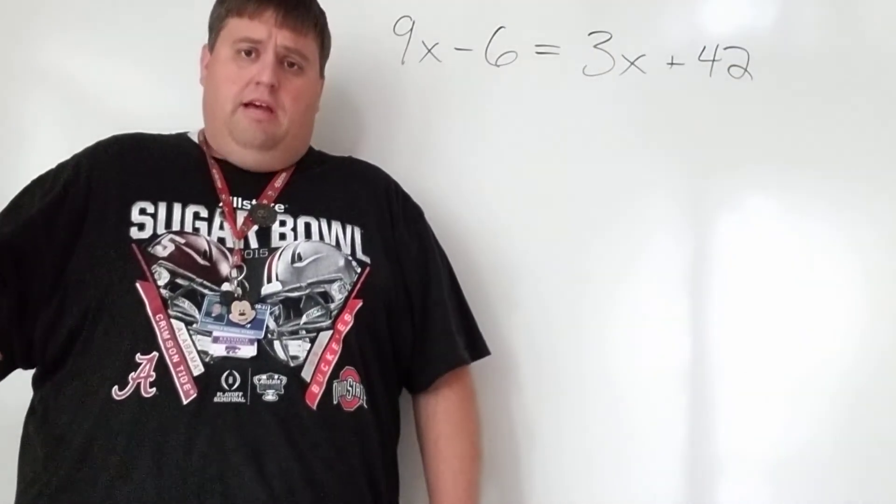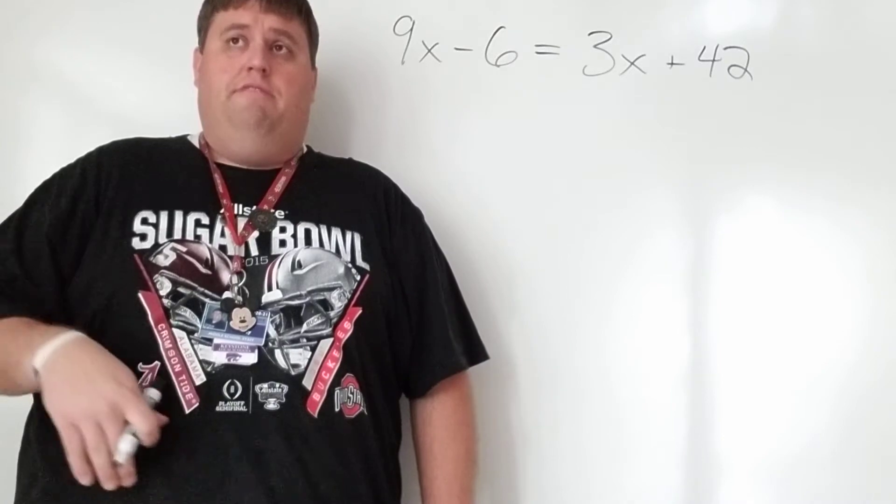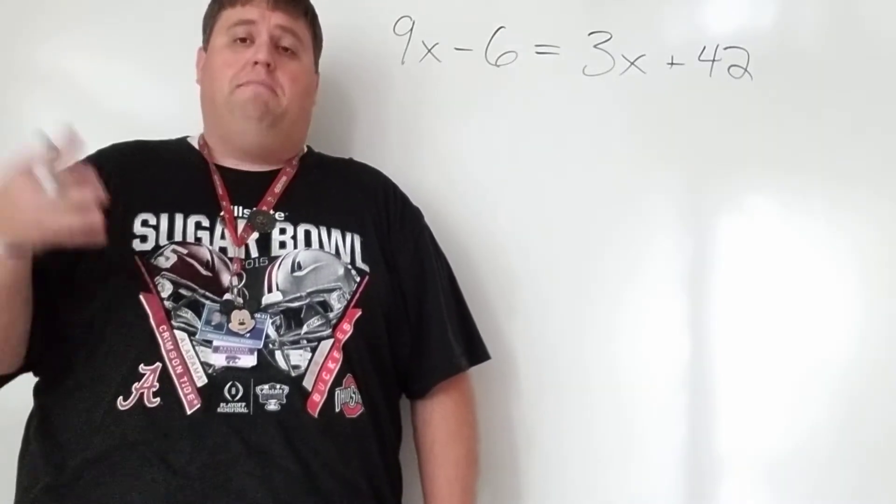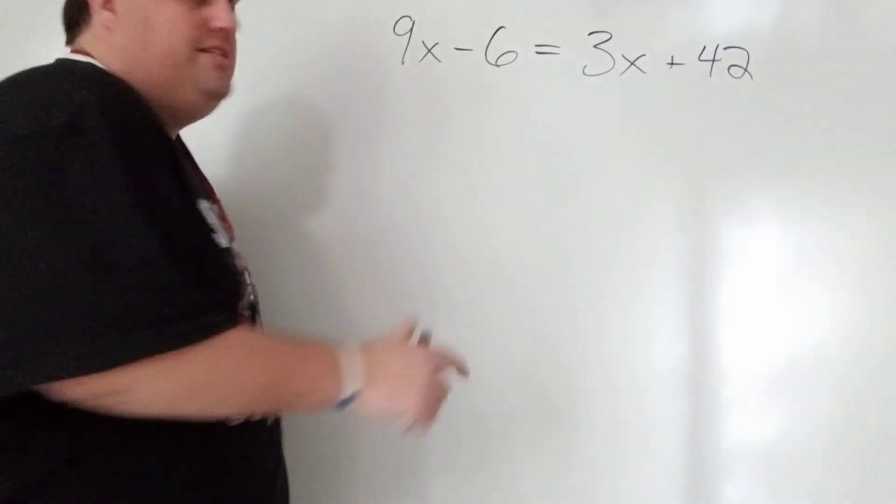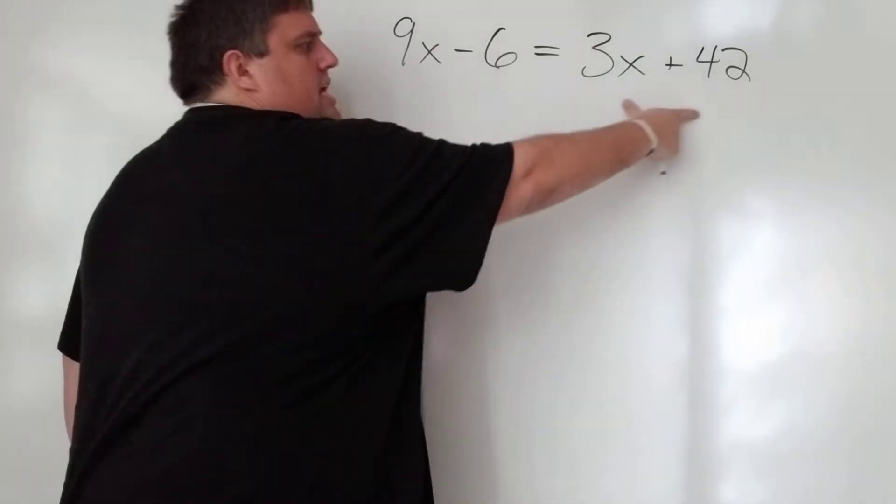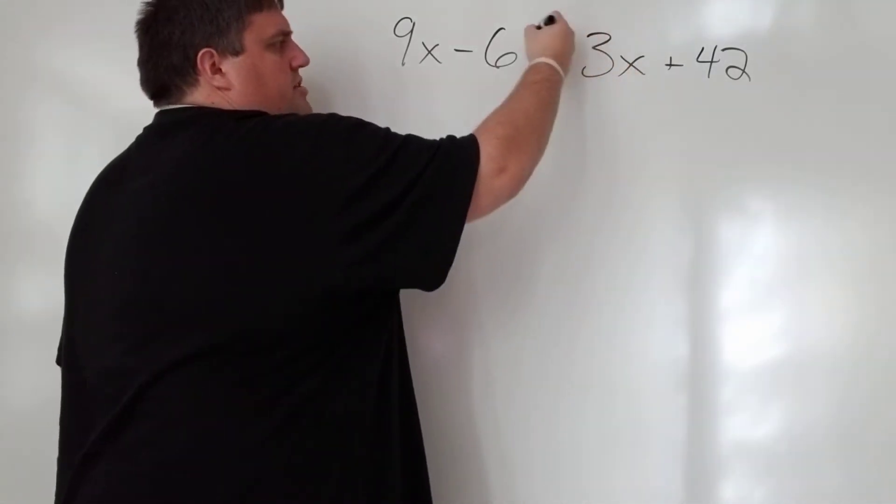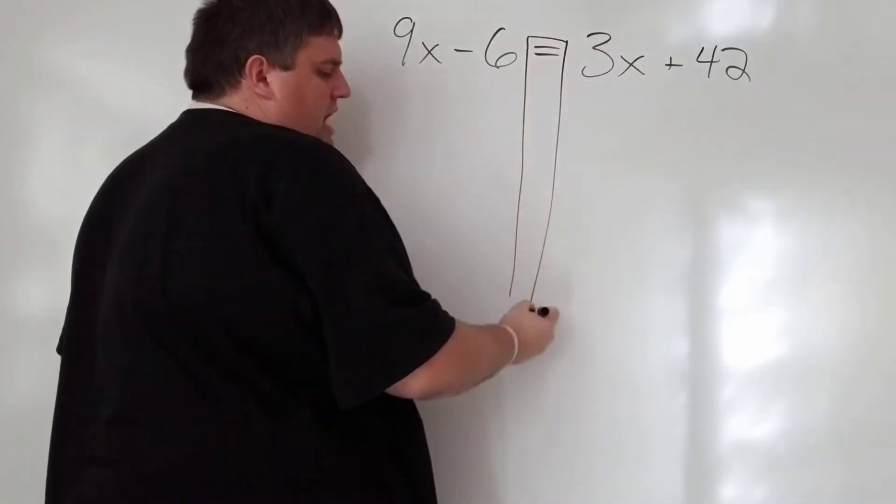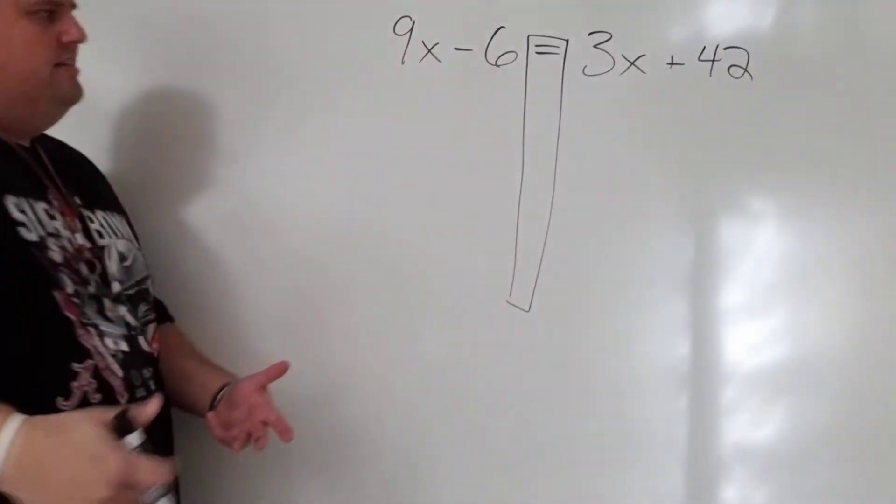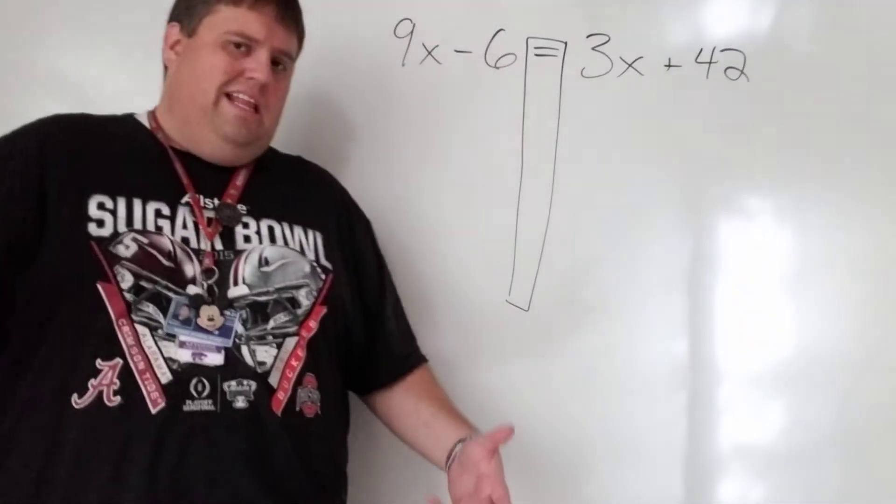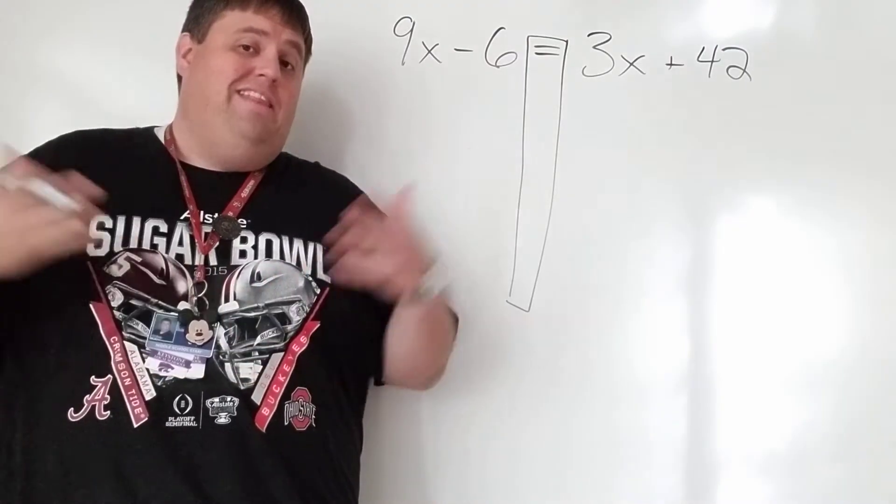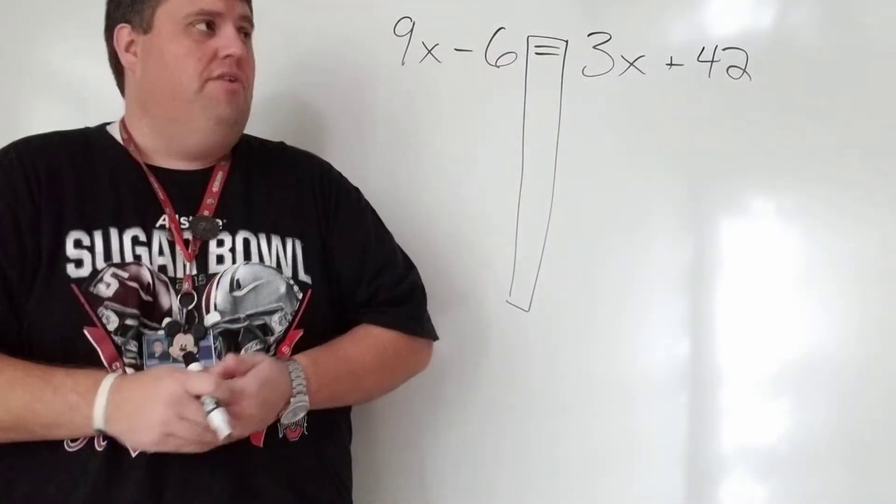If I had distributed property, I'm still going to distribute first. If I have like terms, I'm still going to add my like terms first. Notice that these are not like terms and these are not like terms. So we're kind of at the step where I've already done a lot of the stuff that we've talked about. If I had adding the opposite, I might do that first also.